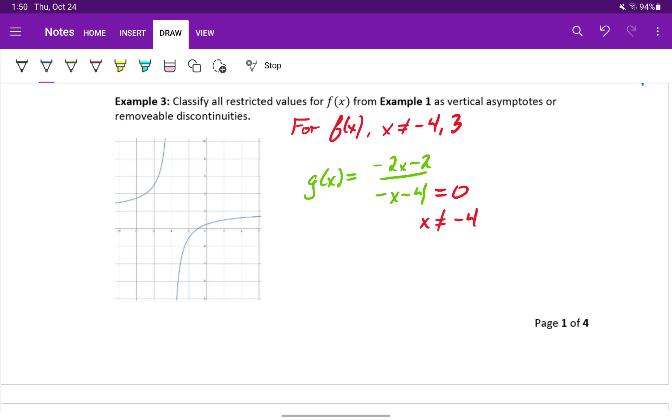Now we just compare those results. Since both the original function and the simplified function are both undefined at negative four, we know that x equals negative four is a vertical asymptote.